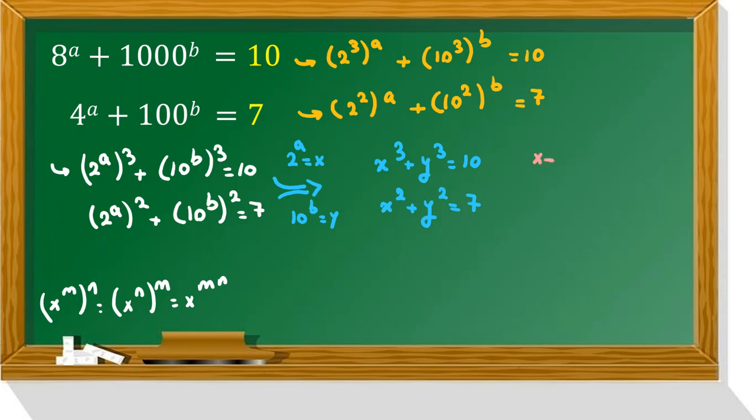We use changing variable x plus y equal to s, and xy equal to p. And we write these two equations in terms of s and p.